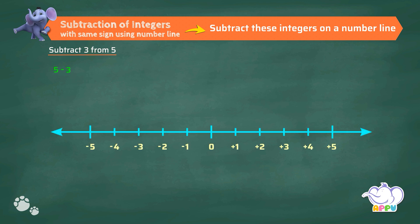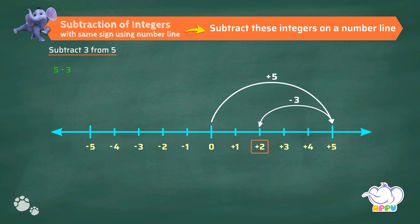With reference to 0, we move 5 to the right to get plus 5. Then, move 3 to the left from plus 5. We reach plus 2. So, the answer is 2.